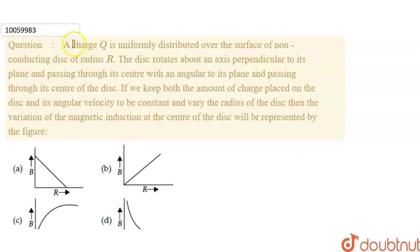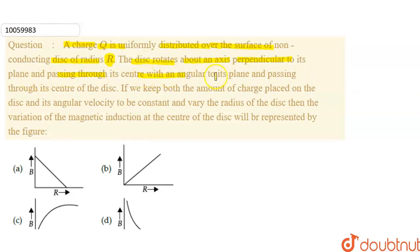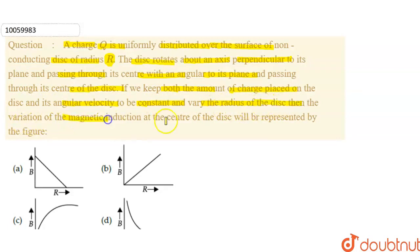Hello everyone! Here is the question for you. A charge Q is uniformly distributed over the surface of a non-conducting disk of radius R. The disk rotates about an axis perpendicular to its plane and passing through its center with an angular velocity. If we keep both the amount of charge placed on the disk and its angular velocity constant and vary the radius of the disk, then the variation of the magnetic induction at the center of the disk will be represented by which figure?